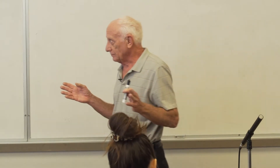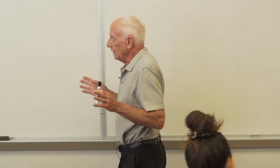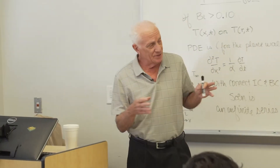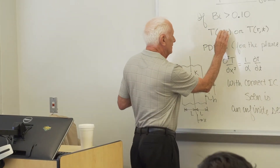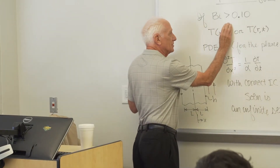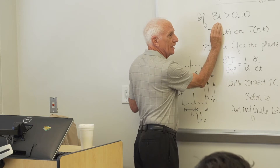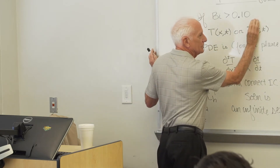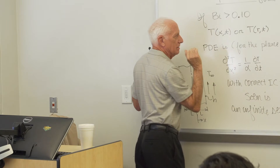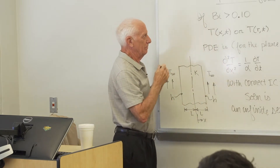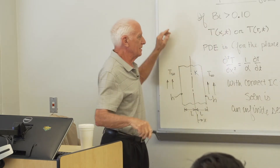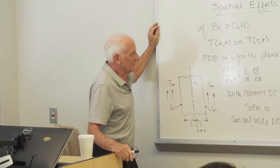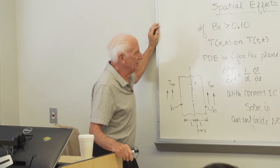So that's today's topic. If the Biot number is less than 0.1, the temperature only depends on time, not on X or R. If the Biot number is greater than 0.1, now it depends on two variables: X and T, or R and T.